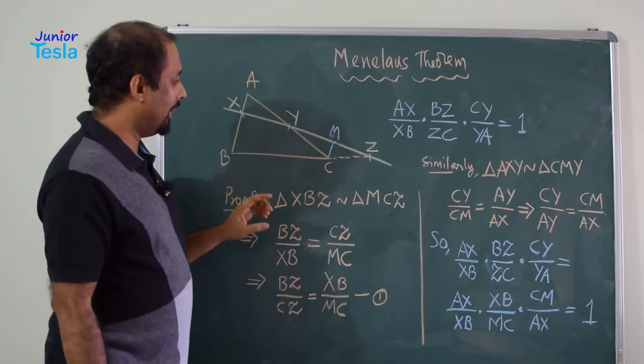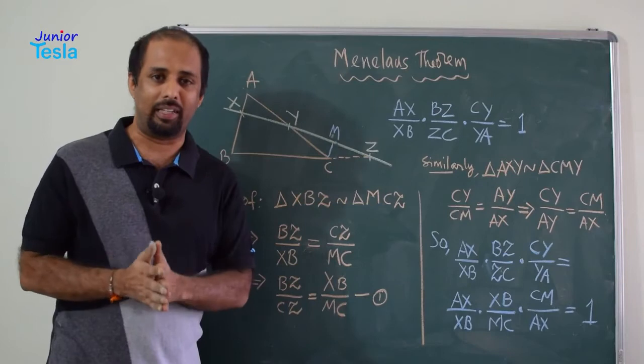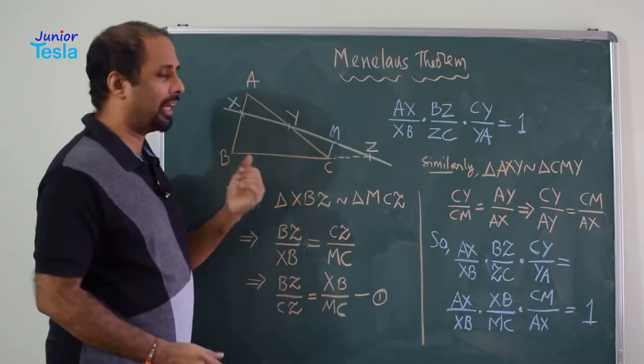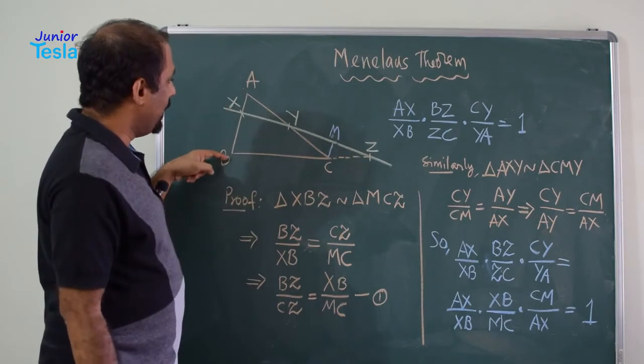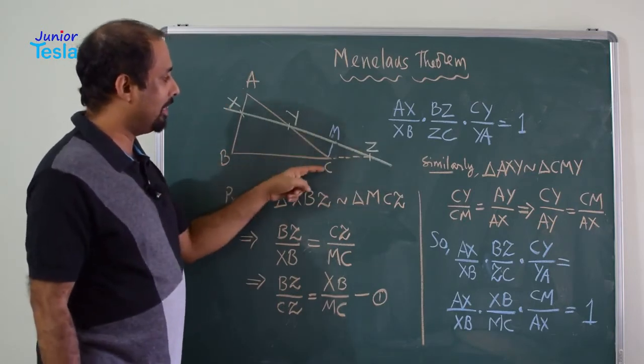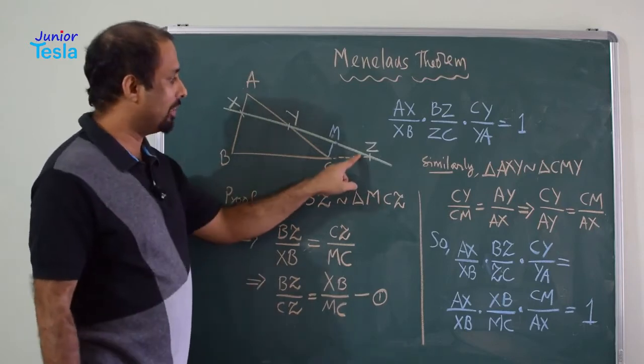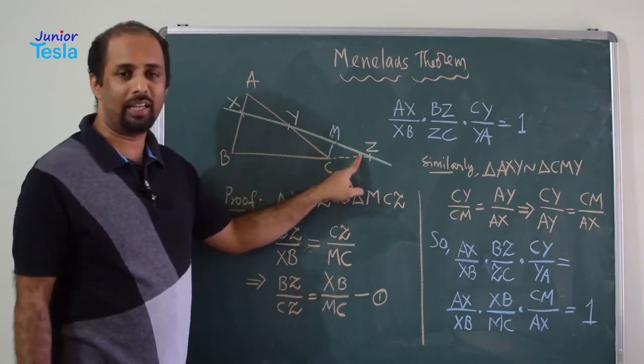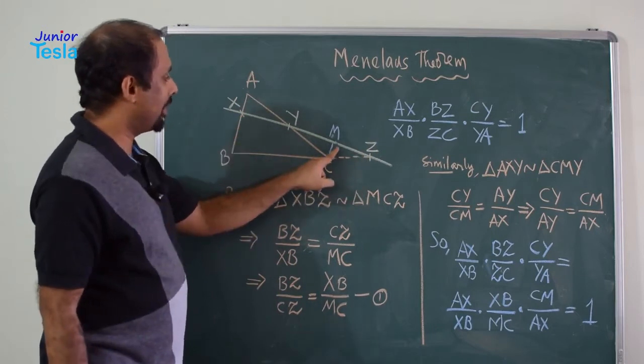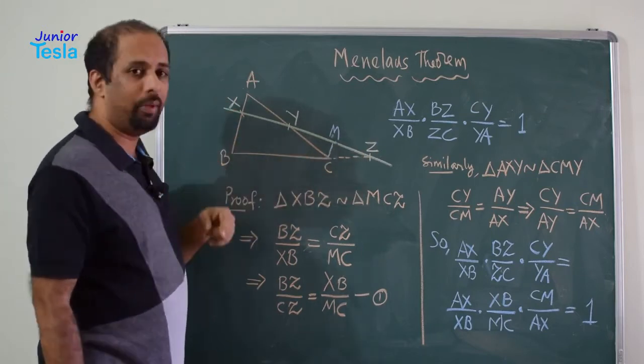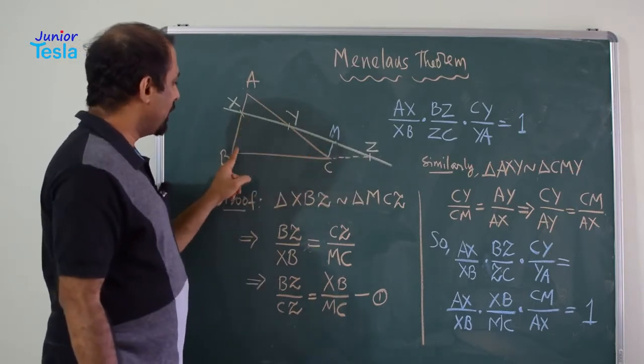Now, once I have done that, I am going to see or I am going to compare some similar triangles. Now, there are a lot of similar triangles here. One of the pairs is XBZ and MCZ. So, these two are similar triangles. Why? Because this third angle is common, angle Z is common for both the triangles and this angle is equal to this angle because CM is parallel to AB or XB. So, these two angles are equal and these two angles are equal.